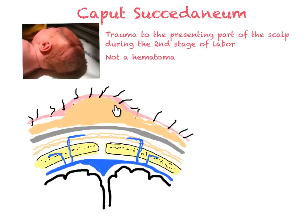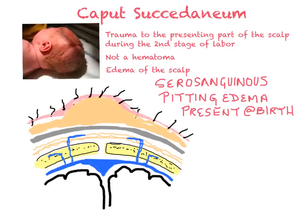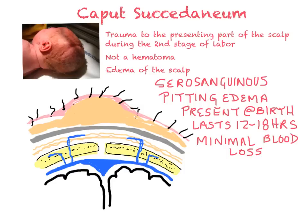It is a swelling related to traumatic edema of the second layer of the scalp, the dense connective tissue. The fluid is serosanguinous and if you press down on it, it causes pitting edema. It is present at birth and resolves within 12 to 18 hours. Blood loss is minimal, about 10 to 15 ml at max, and there are no associated complications.